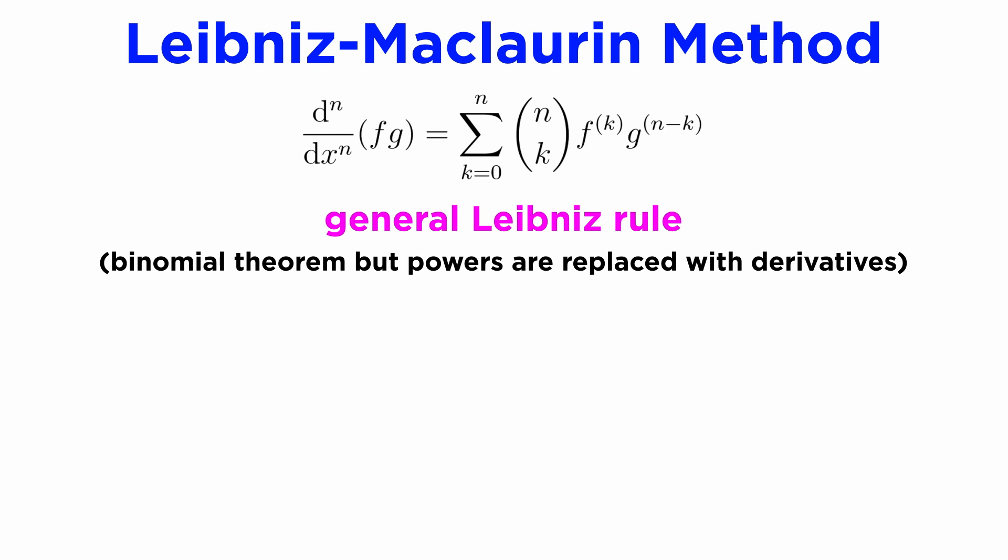There is a shortcut to this process, however, known as the Leibniz method, or sometimes the Leibniz-Maclaurin method, and it exploits something called the general Leibniz rule. This states that if we have a product of two functions, f and g, and we want to differentiate it n times, which would normally take a while by using the product rule, we can write it in this form here, which is basically the binomial theorem from algebra, but with powers replaced with derivatives.